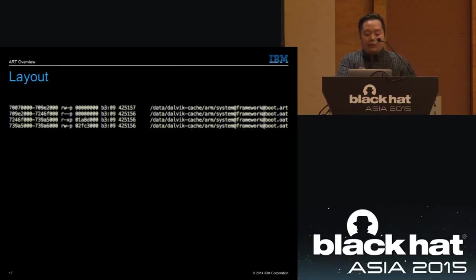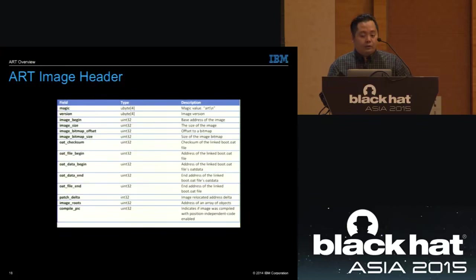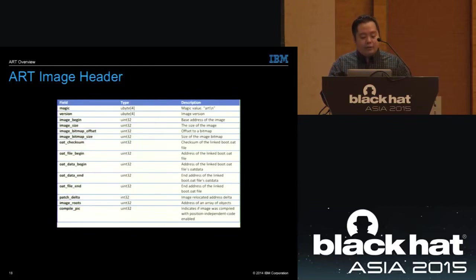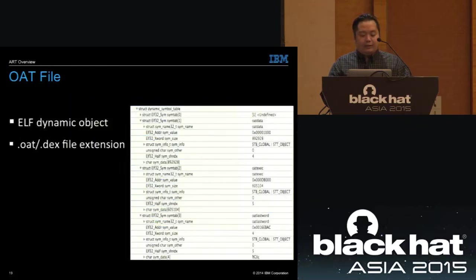The ART image file format starts with a magic 'art' string, followed by a line feed, then a version currently set to 12. The remaining fields describe the link to boot.oat, containing information about the base address of the image and size. The OAT file format is essentially an ELF dynamic object. The extension used is .oat for boot.oat and .odex for regular applications.